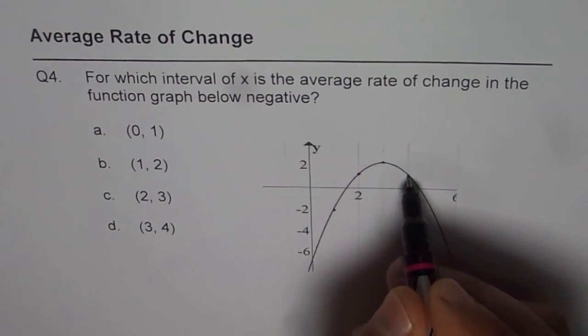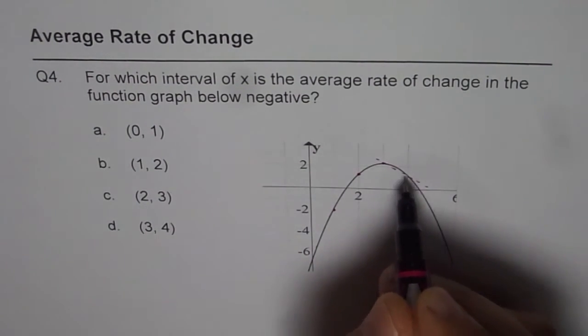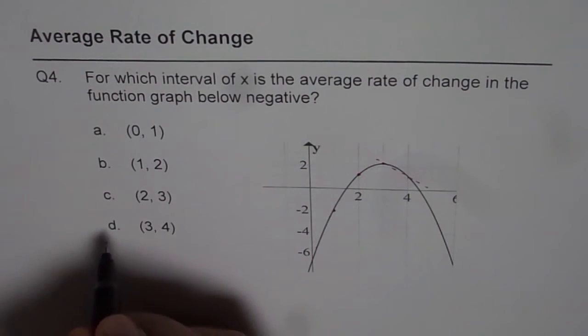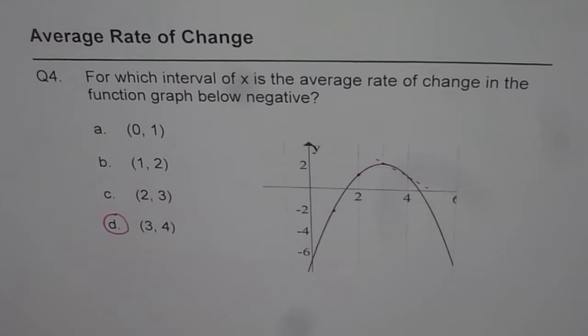3 to 4, however, is negative. That is the interval during which we have negative rate of change. Therefore, this is the answer. Thank you.